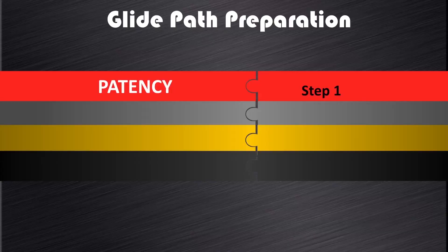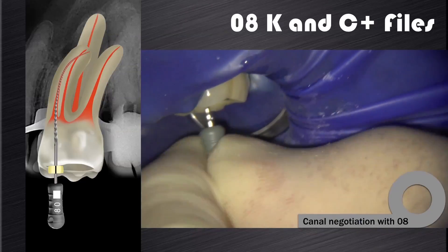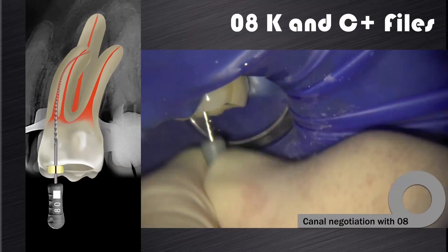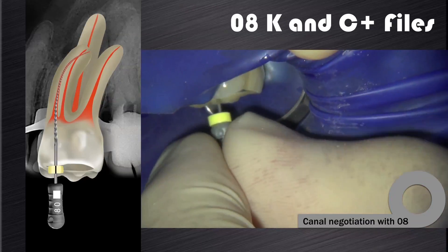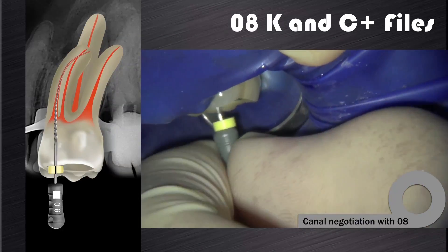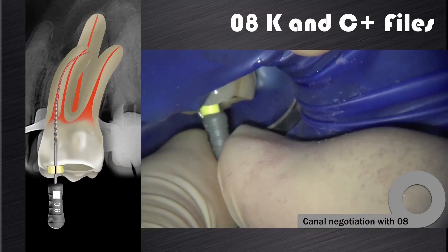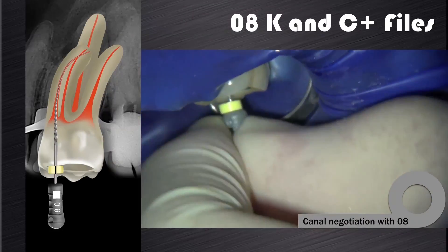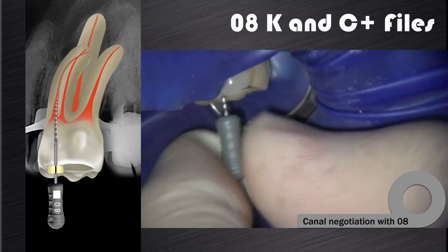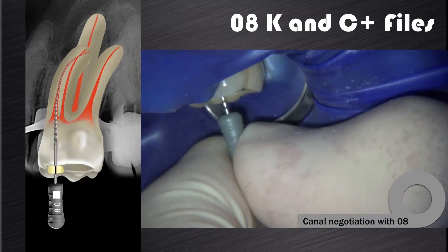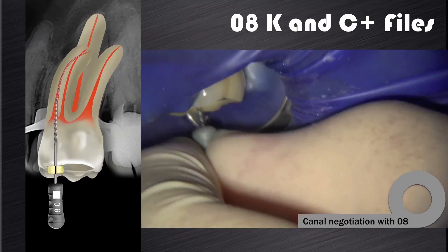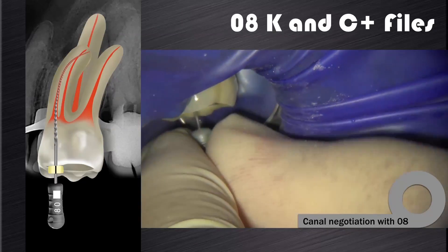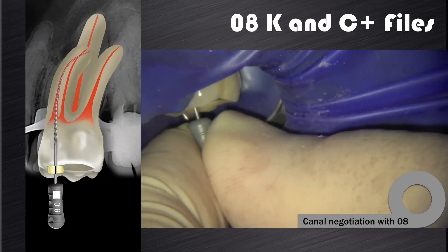Canal patency is the first step. I use a combination of 08 C-plus and 08 K files to negotiate the canals to patency. Some cases are easy and some cases are very, very difficult. The inability to create patency to full working length is often the reason why we see so many poorly prepared and obturated root canal systems. In this video clip you can see that I've just achieved patency.